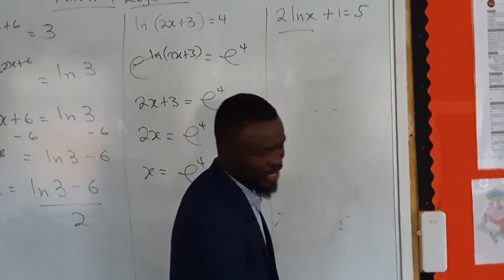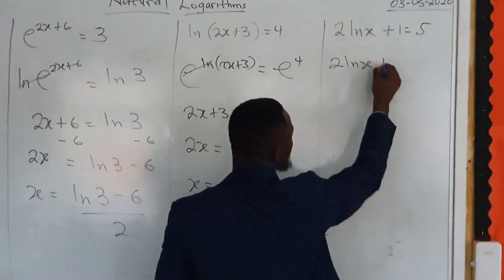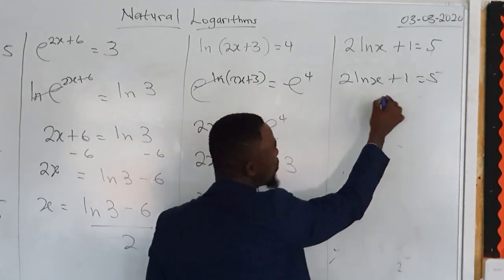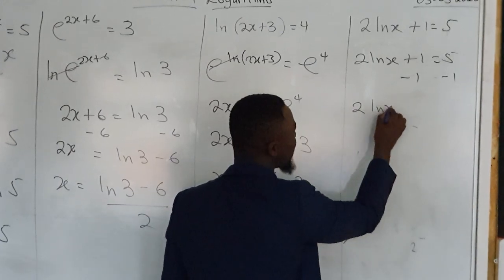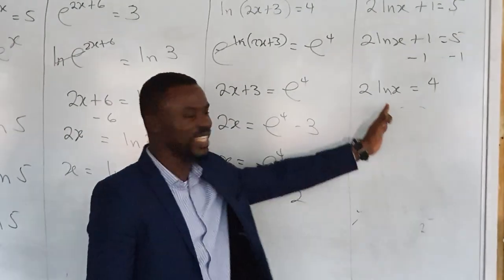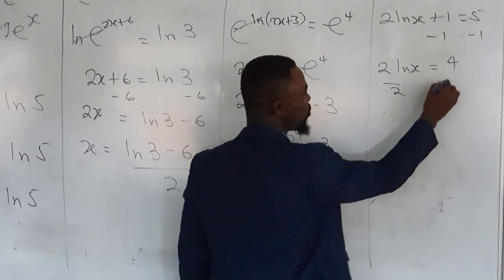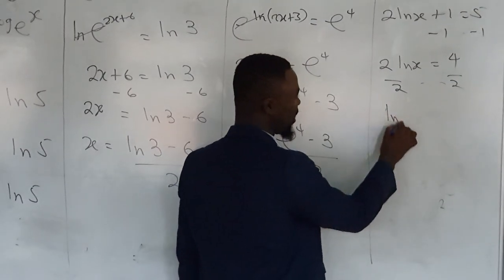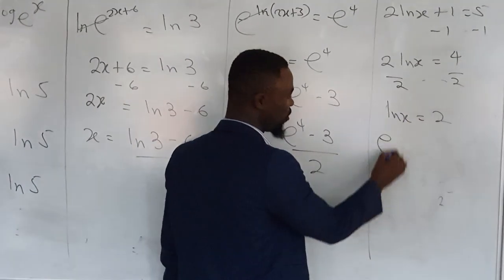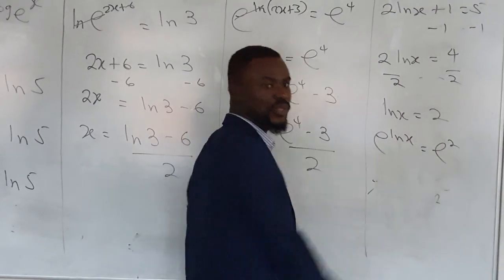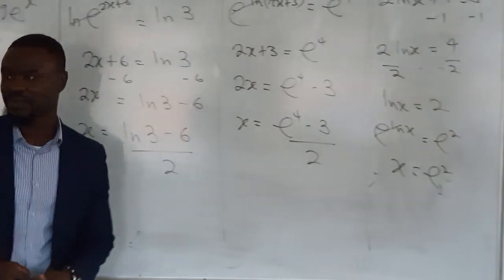We have 2 ln x + 1 = 5, solving normal equation, minus 1 here, minus 1 there. So we end up with 2 ln x = 4. So we want ln x. It means we have to get rid of the 2 at the front, which means we divide by 2, divide here by 2. So we end up with ln x = 2. Then take your e of both sides. So we'll have e^(ln x) = e^2. So that goes away, and your x will be that. And you can just put that on your calculator.